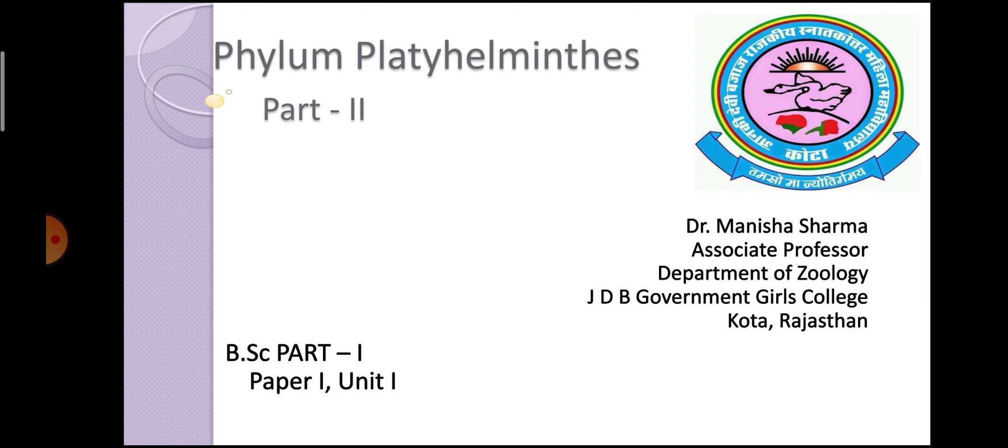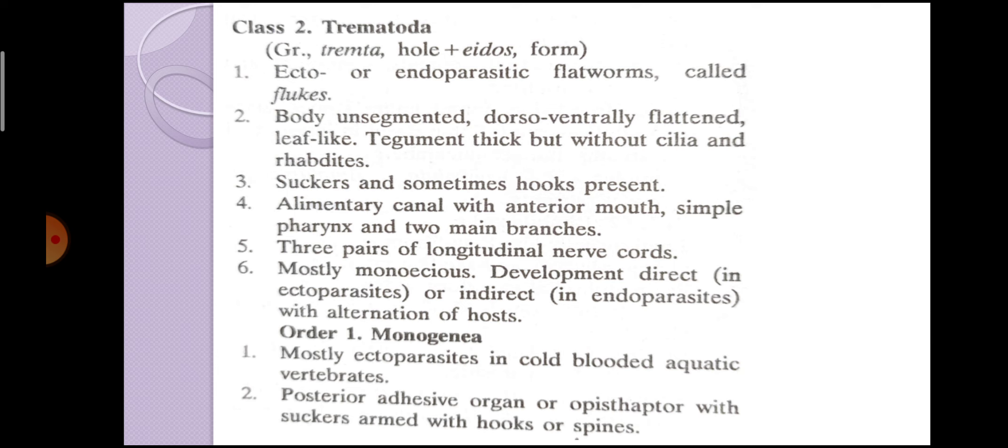Today we will be studying the second part of Phylum Platyhelminthes. In this, we will study the classification from class Trematoda onwards. In the last lecture, we had seen the general characters of Phylum Platyhelminthes and studied the outline, including the first class, Turbellaria, and the planarians.